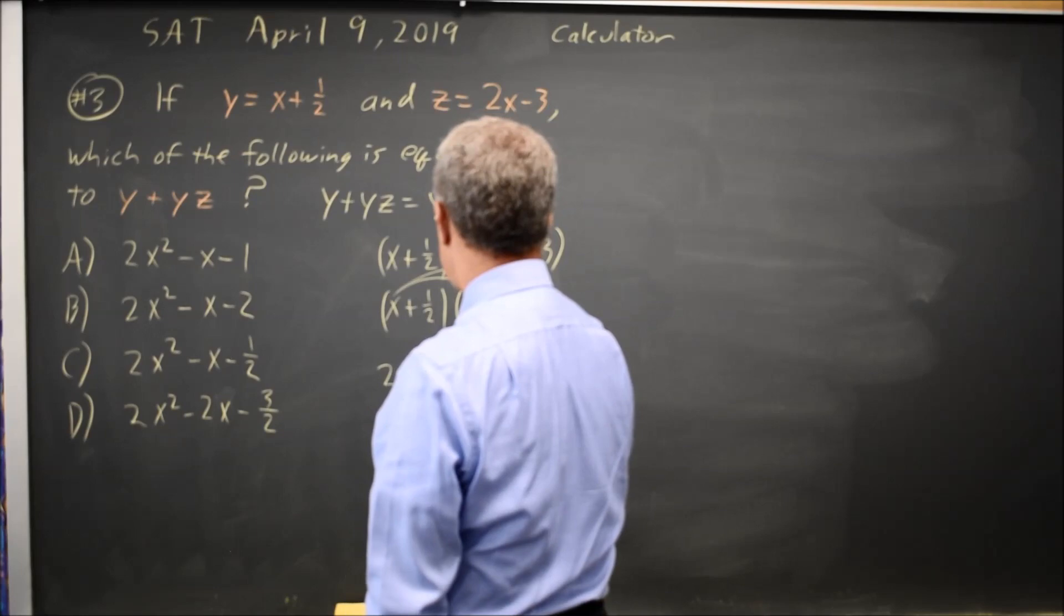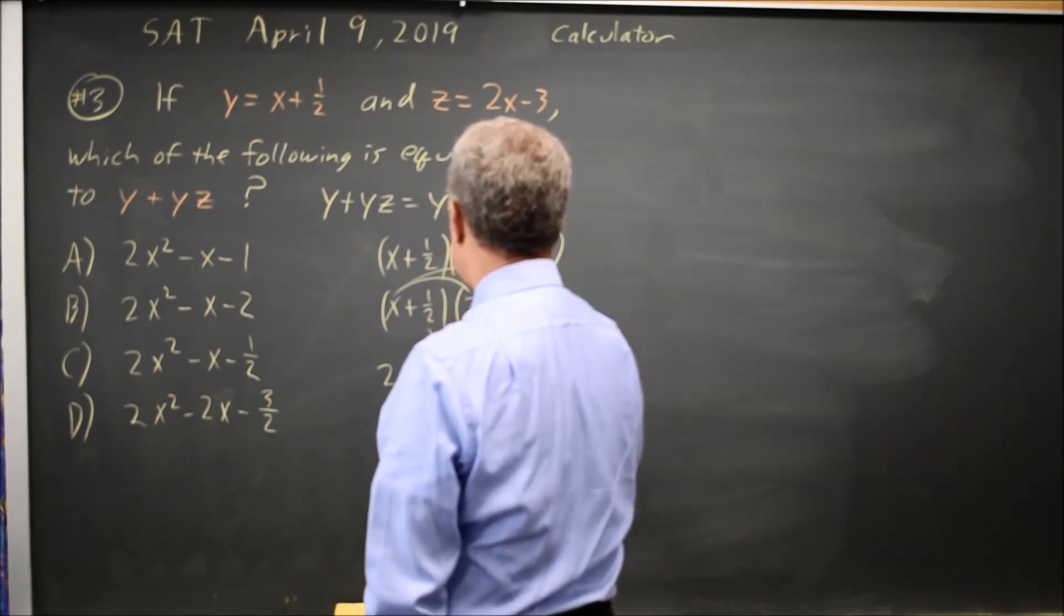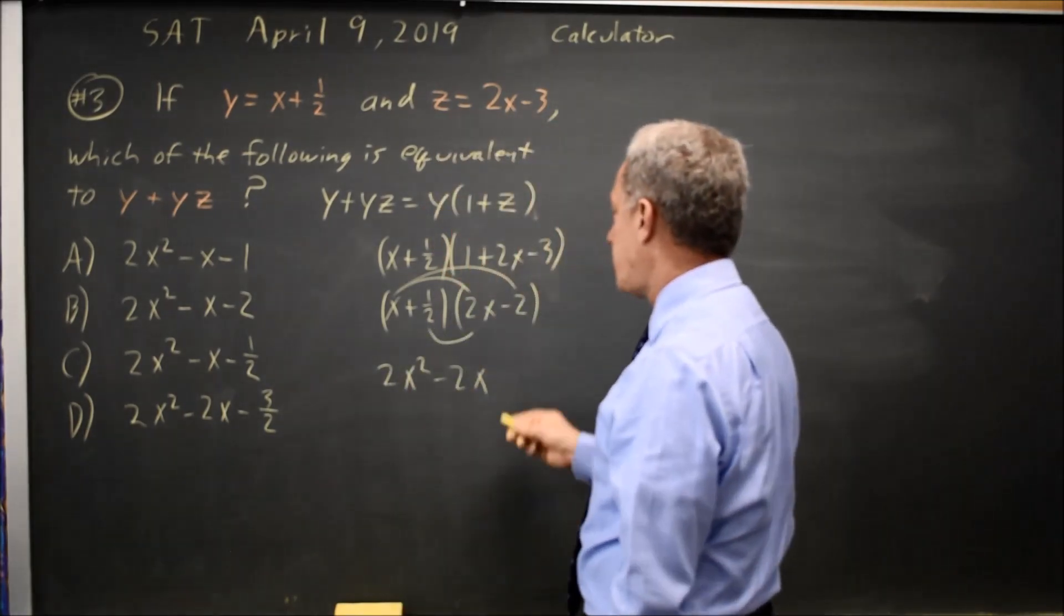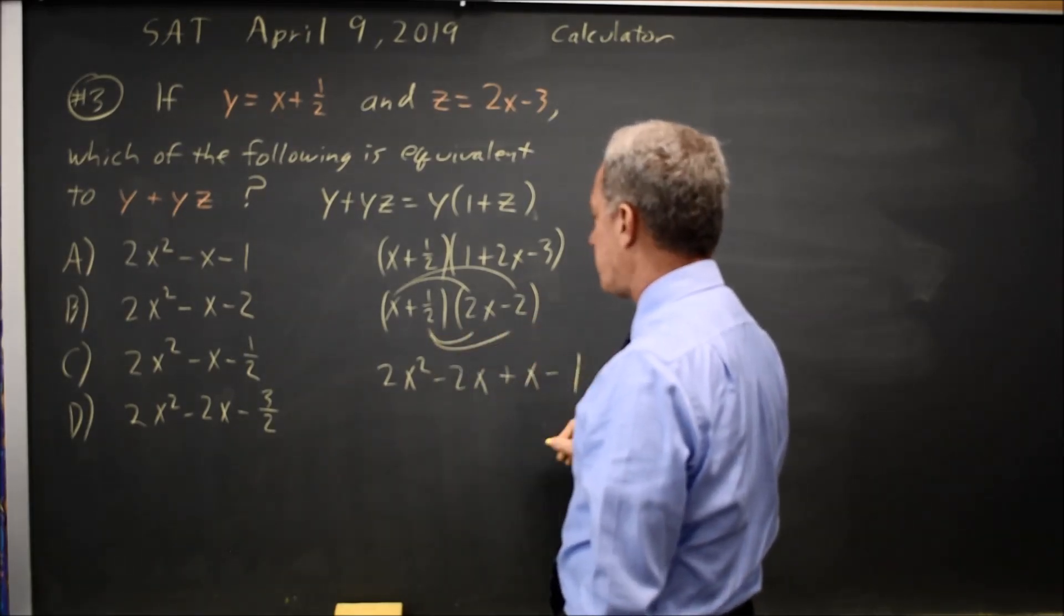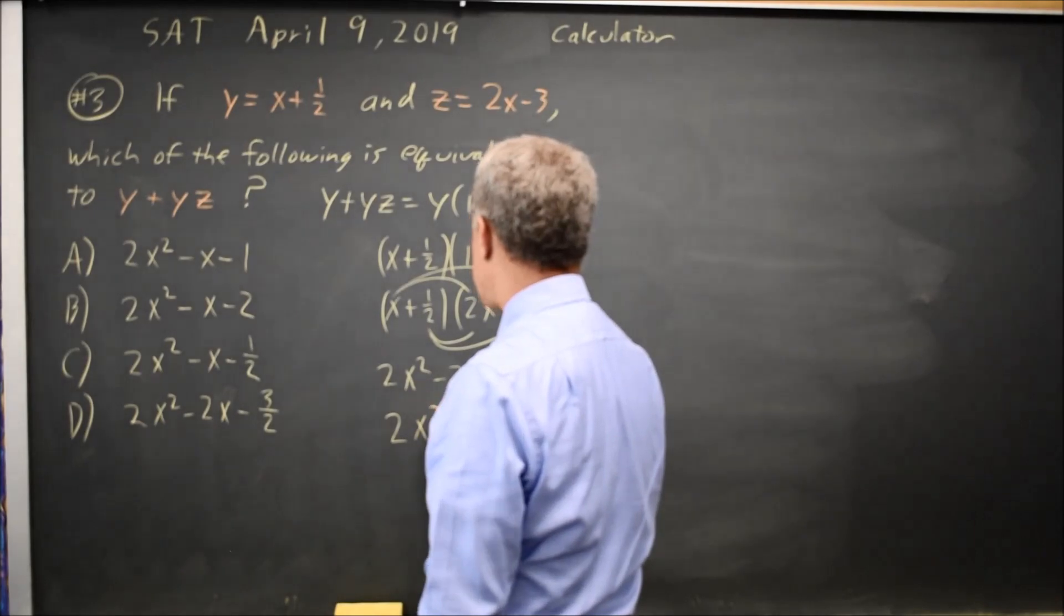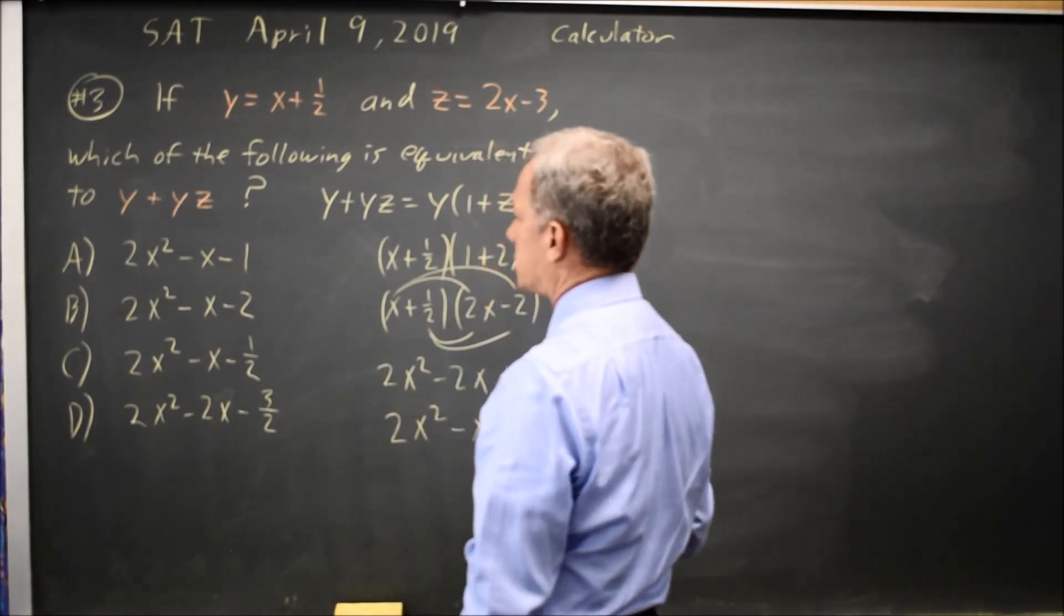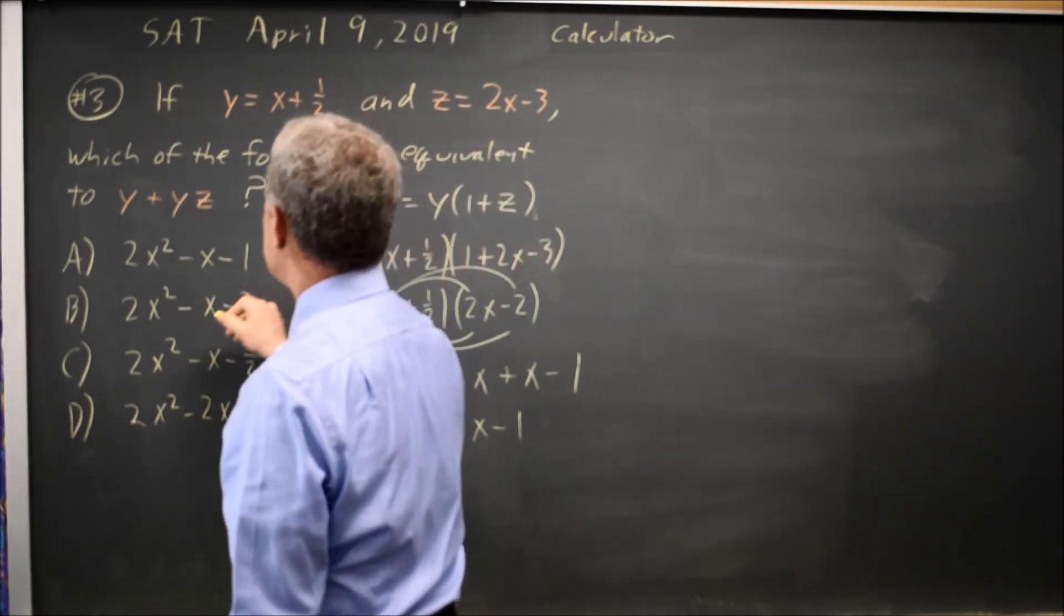x times negative 2 is minus 2x, 1 half times 2x is 1x, and 1 half times negative 2 is negative 1. That simplifies to 2x squared minus x minus 1, which is choice A.